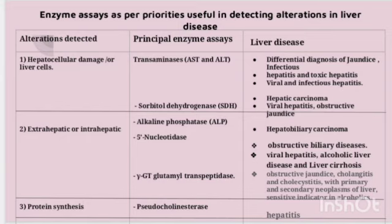These enzymes are assayed in conditions like hepatobiliary carcinoma, obstructive biliary diseases, viral hepatitis, alcoholic liver disease, and liver cirrhosis. Gamma glutamyl transpeptidase plays a very important role in alcoholic-related liver disorders. Pseudocholinesterase is used to identify alterations involved during protein synthesis in hepatitis.